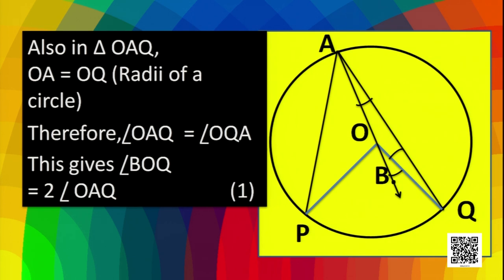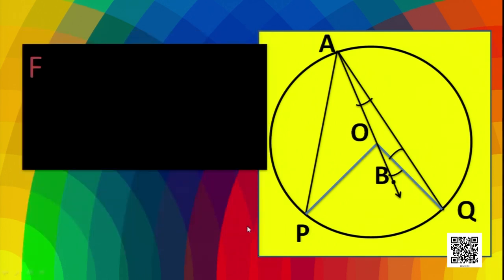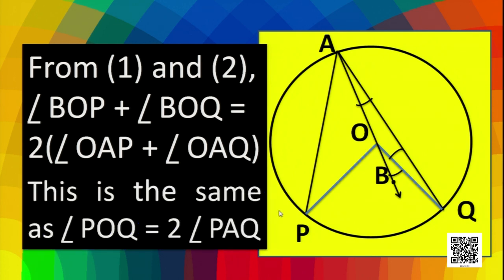Similarly, we can also prove that angle BOP is twice the angle OAP. Let this be equation 2. Now, if we add these two equations, we get angle BOP plus angle BOQ is equal to twice angle OAP plus twice angle OAQ. Taking 2 as common, we have 2 times (angle OAP plus angle OAQ). Now, BOP and BOQ together constitute angle POQ. So, we can write angle POQ is equal to 2 times angle PAQ. This is our proof.